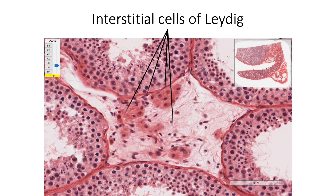The third type of cell found in the testis is the interstitial cells of Leydig, found in the connective tissue stroma between the seminiferous tubules. These are large polygonal cells with eosinophilic cytoplasm due to abundant smooth endoplasmic reticulum. The cytoplasm also contains lipid droplets, lipofuscin granules, and rod-shaped crystals of Reinke. These cells secrete testosterone.